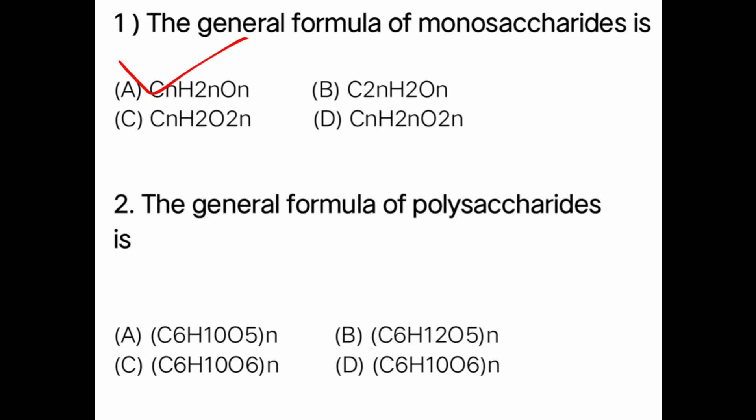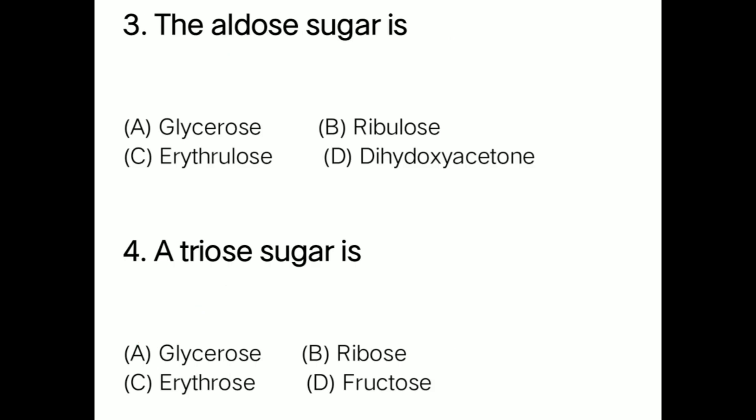Question 2: The general formula of polysaccharide is option A C6H10O5n, option B C6H10O5n, option C C6H10O6n, option D C6H10O6n. The correct answer is option A: C6H10O5n.